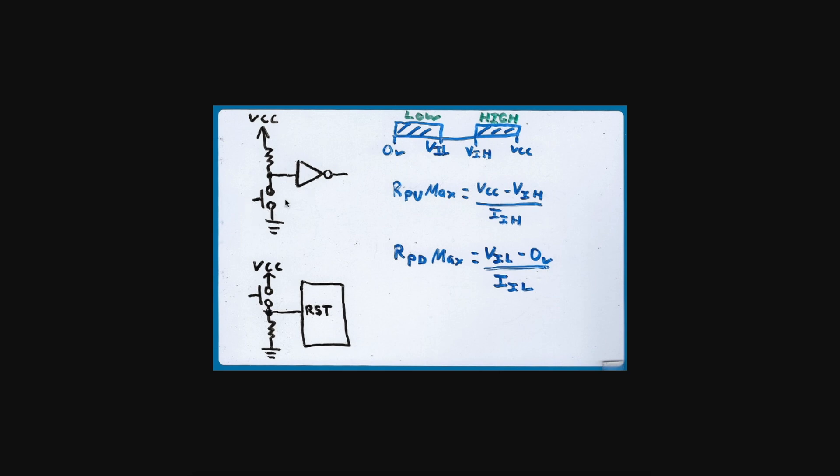So if you want the switch to present a logic low when you close it, you'll need a pull-up resistor to VCC so that when the switch is not closed, the input is at a guaranteed high state. If you want the switch to present a logic high when closed, you need a pull-down resistor to guarantee a logic zero when the switch is open.